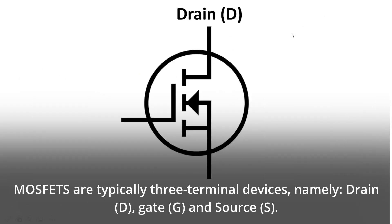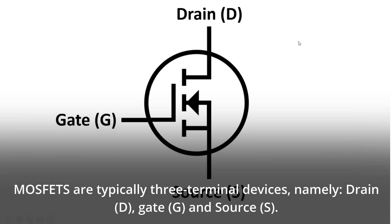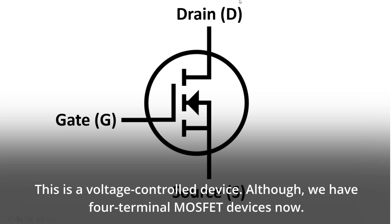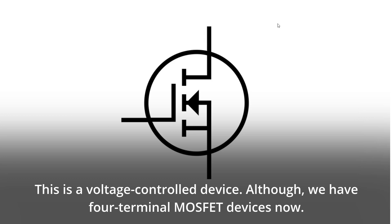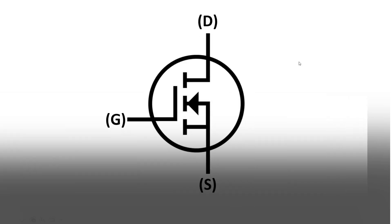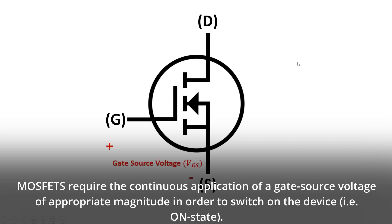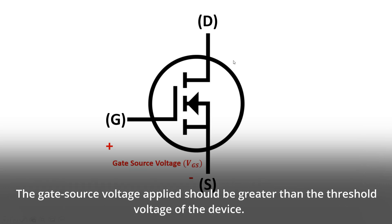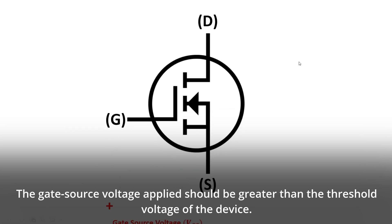MOSFETs are typically three terminal devices, namely drain (D), gate (G), and source (S). This is a voltage controlled device, although we now have four terminal MOSFET devices. MOSFETs require the continuous application of a gate-source voltage of appropriate magnitude in order to switch on the device, i.e. on state. The gate-source voltage applied should be greater than the threshold voltage of the device.